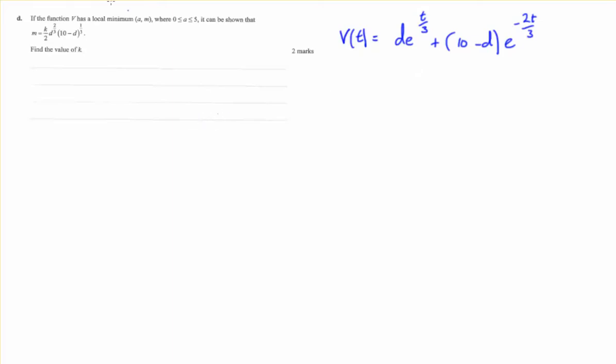Now, we're told a few facts, we're told that it has a local minimum at this point, so immediately we can say that v of a must equal m.